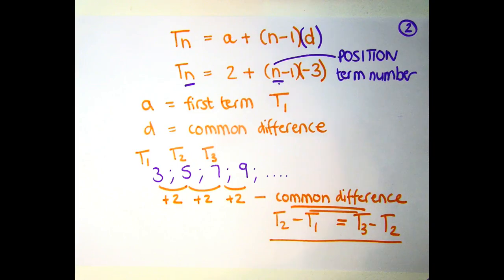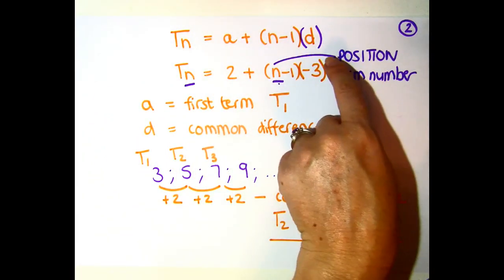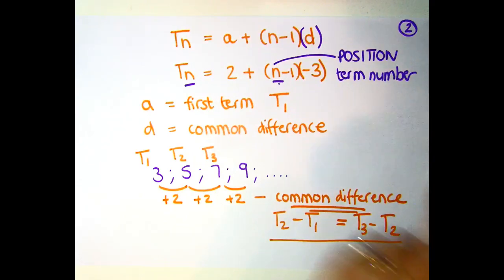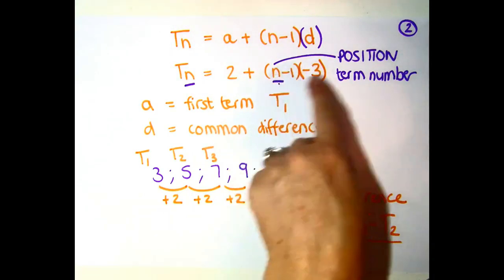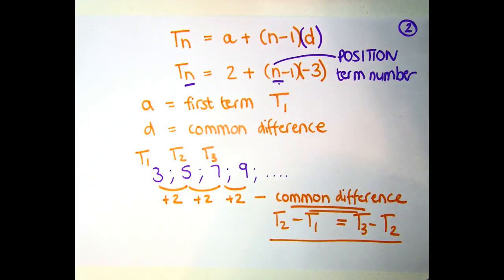A useful formula to use is a plus (n minus 1)d, and I recommend that you bracket the d so that if the constant difference is a negative number, you won't forget that you are multiplying that n backwards. a stands for the first term, which is T1, and d is the common difference.